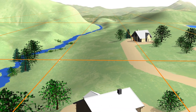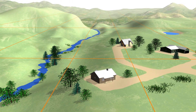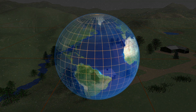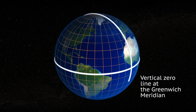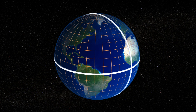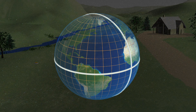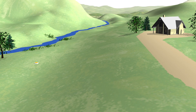Horizontal datums allow us to measure distances and directions across the surface of the Earth. Most horizontal datums define a zero line at the equator, from which we measure north and south. There is also a zero line at the Greenwich Meridian, from which we measure east and west. Together, these lines provide a reference for latitude and longitude.